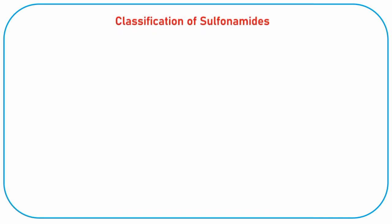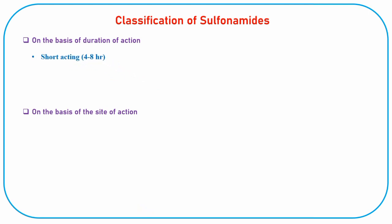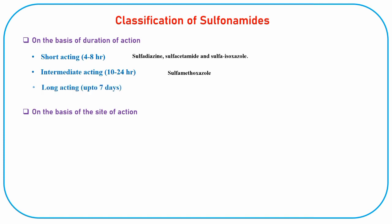Classification of sulfonamides: Sulfonamides can be classified on the basis of duration of action and on the basis of site of action. Short-acting sulfonamides, which act in 4 to 8 hours, include sulfadiazine, sulfacetamide, and sulfisoxazole. Intermediate-acting sulfonamides, acting in 10 to 24 hours, include sulfamethoxazole. Long-acting sulfonamides, which act up to 7 days, include sulfasalazine and sulfadoxine.